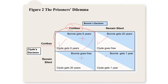Had they cooperated, they could have ended up with the better outcome — going free after a year. However, because there's an incentive to betray, suppose Bonnie talks Clyde into remaining silent. If Clyde remains silent, Bonnie could then confess and go free. There's an incentive to betray, and if you know the other player has an incentive to betray, you can't trust them.